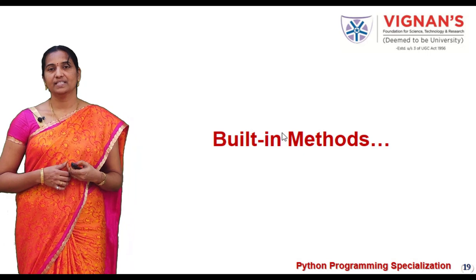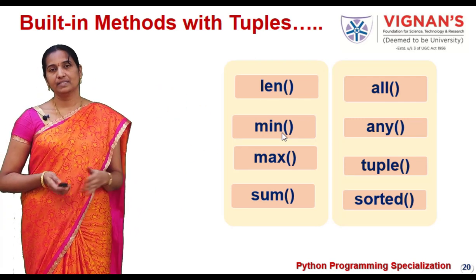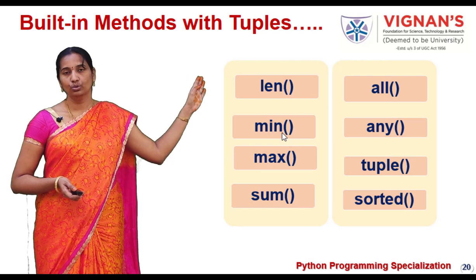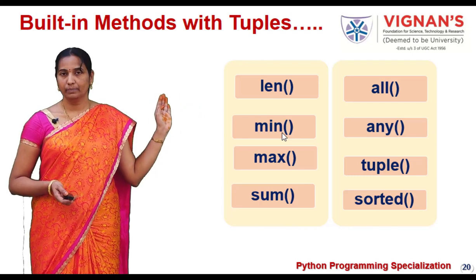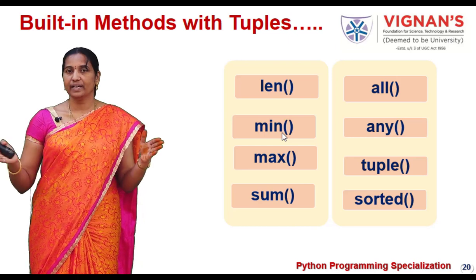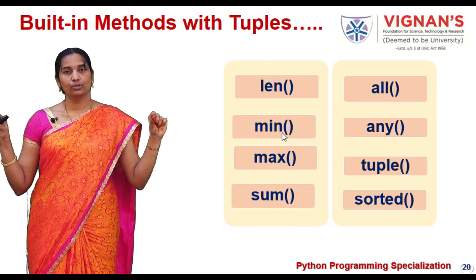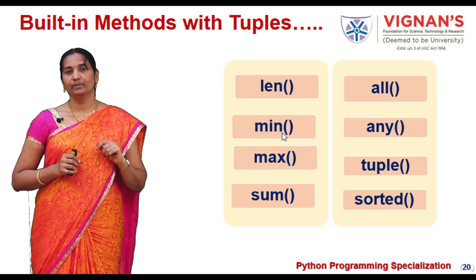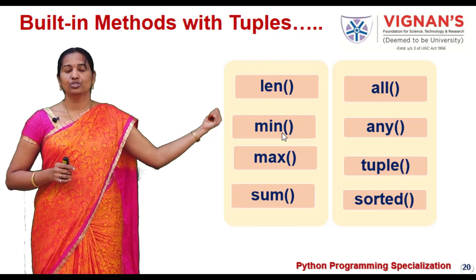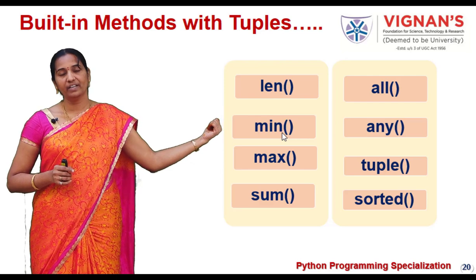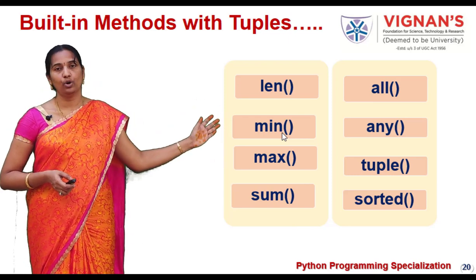Now let us see what built-in methods can be applied with tuples. Tuple allows us to use all the built-in methods that we use with lists. len can be used to get the size of the tuple; min to get the minimum element; max to get the maximum element; sum to get the total sum of elements; all to understand whether all elements in the tuple are true; any to understand if there is any true element in the tuple; and tuple() to create an empty tuple or to convert any iterator to a tuple. Note that sorted cannot be applied on a tuple.